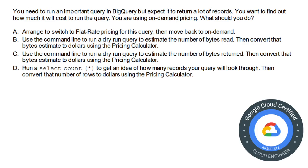Moving on to the next question. You need to run an important query in BigQuery but expect it to return a lot of records. You want to find out how much it will cost to run the query using on-demand pricing. The options include switching to flat-rate pricing, or using the command line to run a dry run query to estimate the number of bytes read and convert that byte estimate to dollars using the pricing calculator. The correct answer is option B: use the command line to run a dry run query.